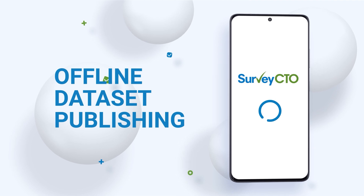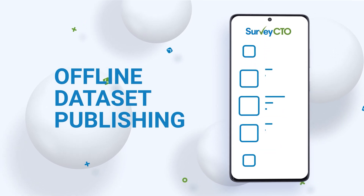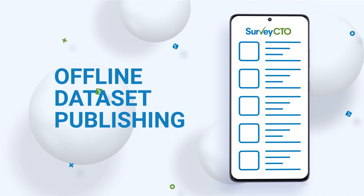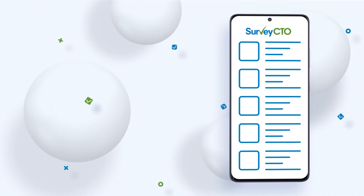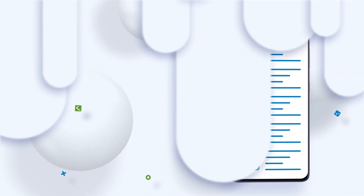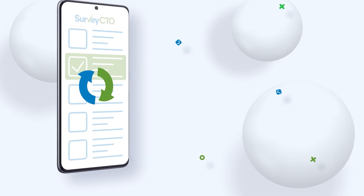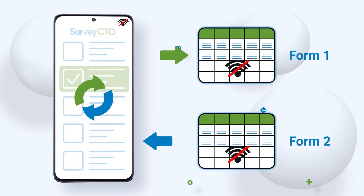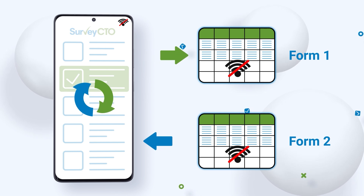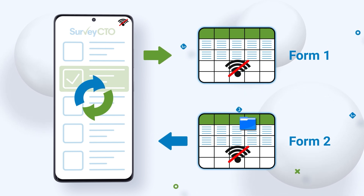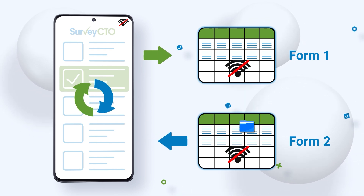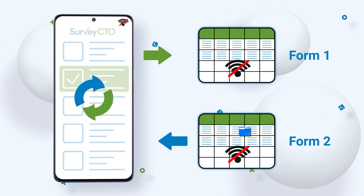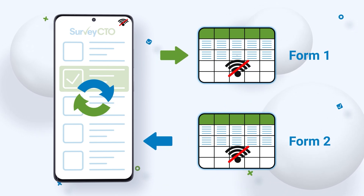Thanks to SurveyCTO's next-level offline data collection features, your enumerators don't need to rely on an internet connection to use the data they just collected in one form immediately in the next one. The form data is saved locally on their device and can be pulled into as many forms as you need, all completely offline. This added flexibility enables your enumerators to complete their data collection anywhere without limitations, saving time and increasing their productivity while out in the field.